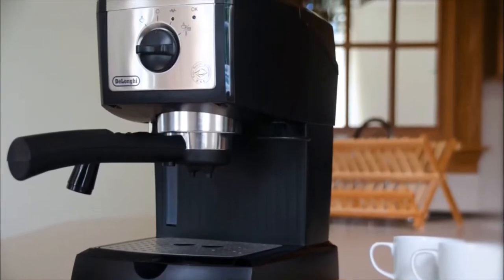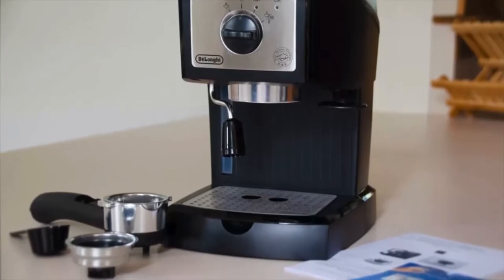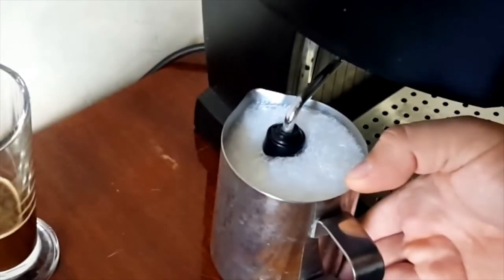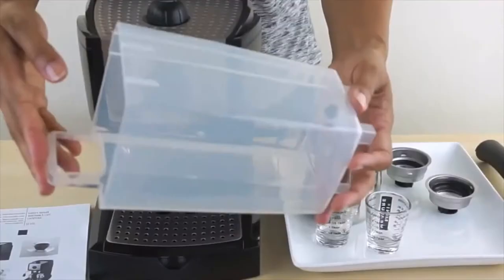Design-wise, the EC155 is compact and has clean lines. It comes in black and has stainless steel features. It does have a milk frother, but no grinder. You can, however, use pods or grinds, depending on your personal preference.